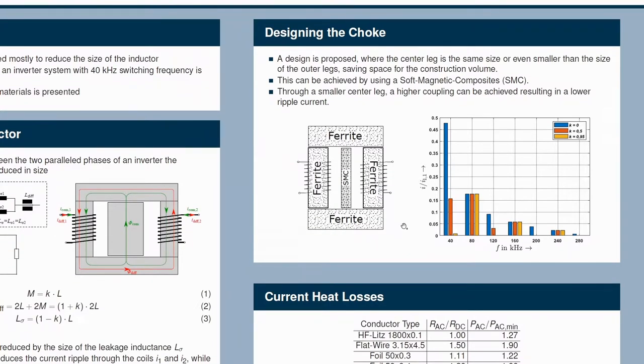So when we look at the actual design of the choke, it is right here. In the outer core ferrite, the outer core is made out of ferrite, and the center leg is made out of soft magnetic composite.